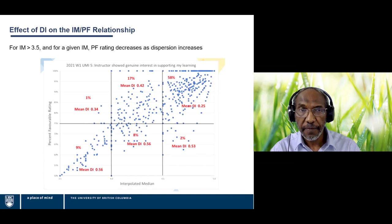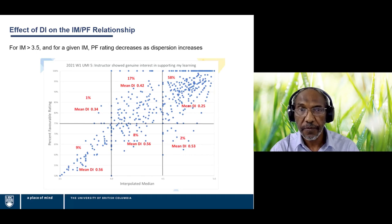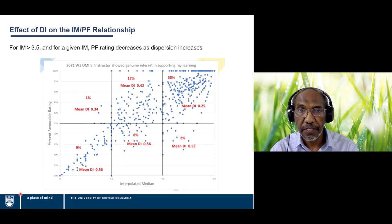Zooming into the upper quadrant of the graph, we see the percentage of instructors in each sub-quadrant and their mean dispersion values. In the upper-right, mean dispersion is 0.25; in the lower-right, it's 0.53. For a given interpolated median value, higher dispersion consistently produces lower percent favorable.